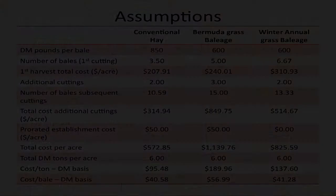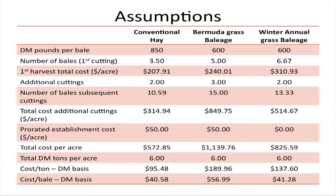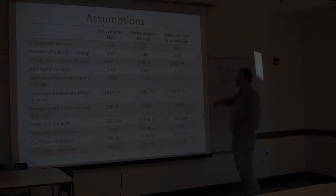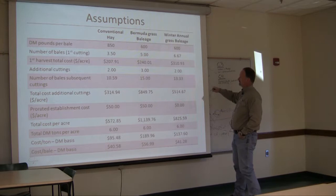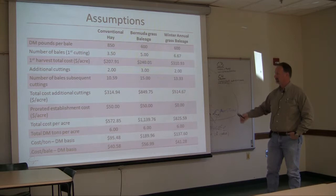A couple of key starting points: a conventional hay bale — a thousand-pound roll at 15 percent moisture — contains 850 dry pounds of dry matter. Bermudagrass baleage or winter grass baleage contains 600 pounds of dry matter per bale. Based on our extension budgets, these are the number of bales per cutting. The first harvest total cost includes operating costs like fertilizer and labor, as well as wrapping.